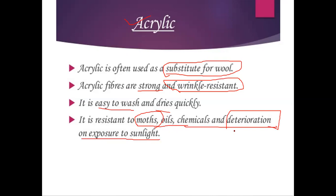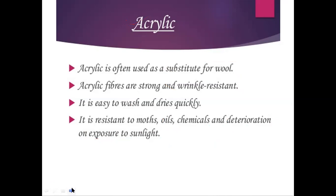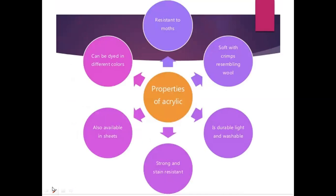Acrylic is resistant to deterioration, meaning the cloth does not degrade easily over time. It is resistant to moths and insects. Oil, chemicals, and sunlight do not cause issues with acrylic. Its properties include: resistant to moths, can be dyed in different colors, available in sheets, strong, stain resistant, durable, lightweight, washable, and soft with a crimped texture resembling wool.